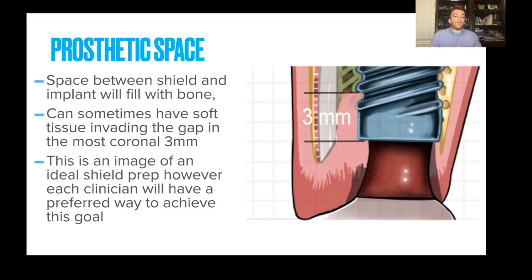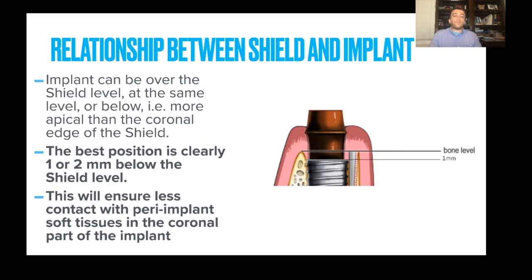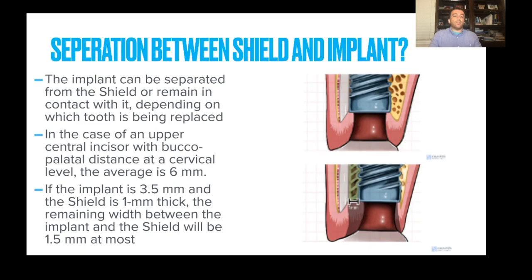In some cases — like a lateral upper incisor or a maxillary central incisor — having adequate buccal-to-lingual width can be a challenge. If the buccal-to-palatal distance is about six millimeters, the implant is three and a half millimeters, and the shield is one millimeter thick, the remaining width between the implant and the shield will be at most one and a half millimeters. Apply the bevel to create the prosthetic space needed for the crown and abutment — you want to avoid compression of the abutment or crown against the shield.